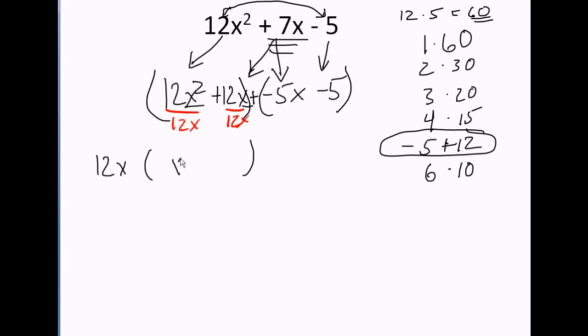So if I divide both of these by 12x, 12 divided by 12 is 1. x squared divided by x is just x. 2 minus 1 is 1. There's an invisible 1 here and an invisible 1 there. It means 1x to the 1 power. 12x divided by 12x. They cancel each other out. Anything divided by itself is a positive 1.